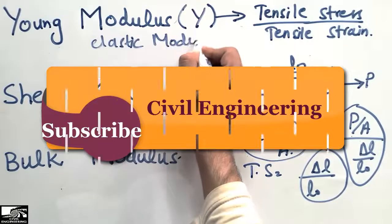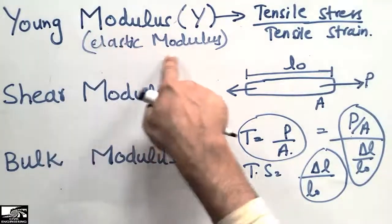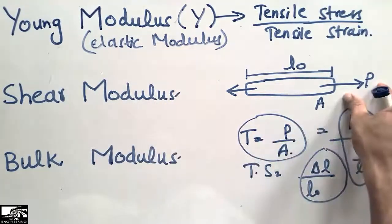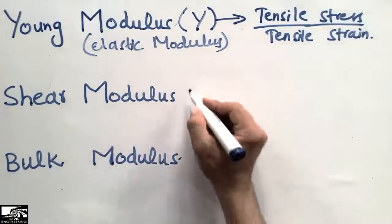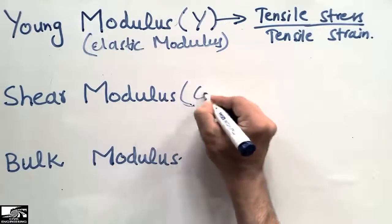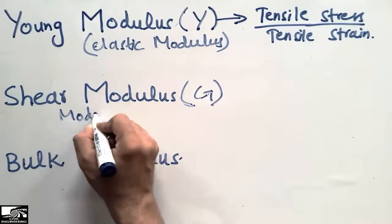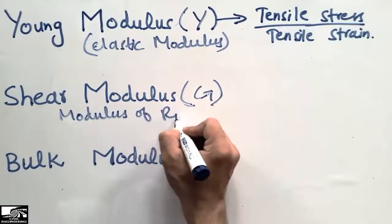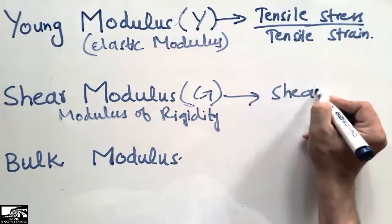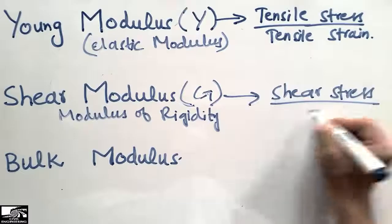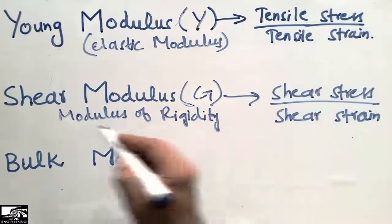The term elastic modulus is mostly used in engineering. Young's modulus is sometimes also called the elastic modulus, and it is the ratio of tensile stress over tensile strain. The second type is the shear modulus. The shear modulus is represented by capital G, and is also called the modulus of rigidity. It is defined as the ratio of shear stress over the shear strain.